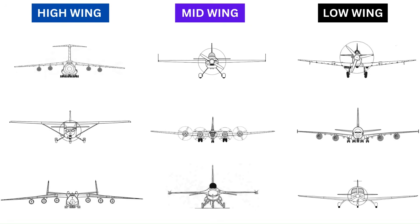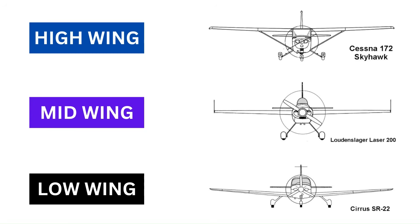How do we know when to choose a high wing, a mid wing, or a low wing for our design? In this video we will look at some of the pros and cons of each wing placement, so that we can decide the best position of the wing for a particular aircraft design. A lot of things need to be considered when selecting the wing vertical position. Let's go through them one by one.